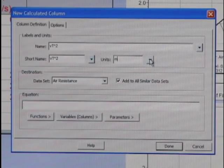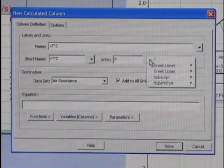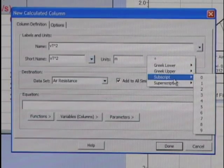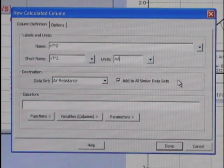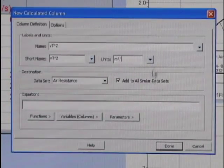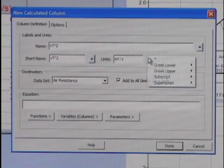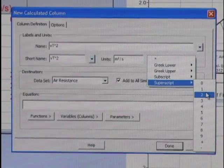And it's going to have units of meters squared per second squared. Here's another little-known feature of LoggerPro. These drop-downs give you access to Greek characters and subscripts and superscripts.